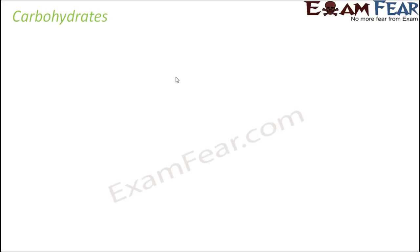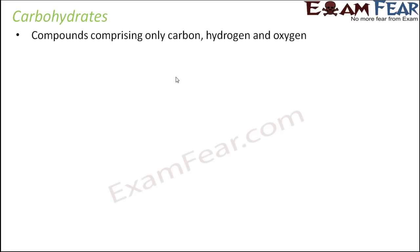Even before that, what exactly are carbohydrates? We know that they are nutrients, but when you look at them chemically, they are made up of carbon, hydrogen, and oxygen. That is why they are called carbohydrates — 'carbo' is from carbon, 'hydro' is from hydrogen, and it also contains oxygen. These are the three important constituents of all carbohydrates.